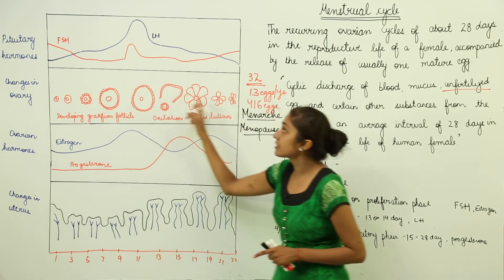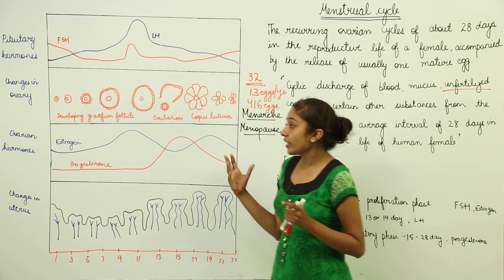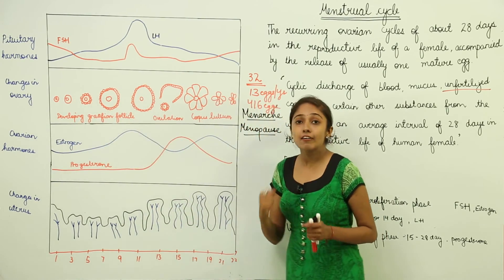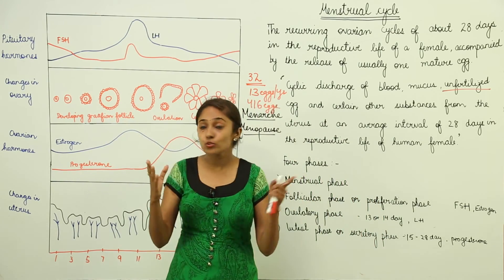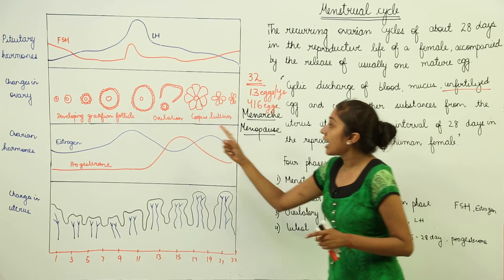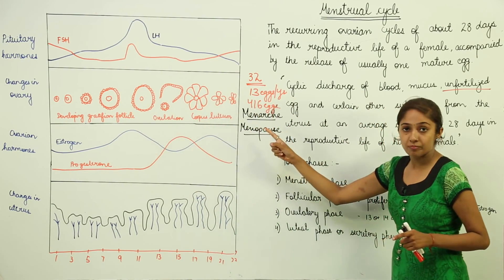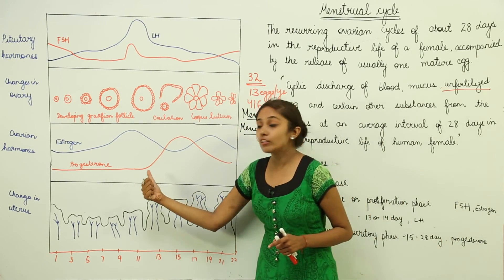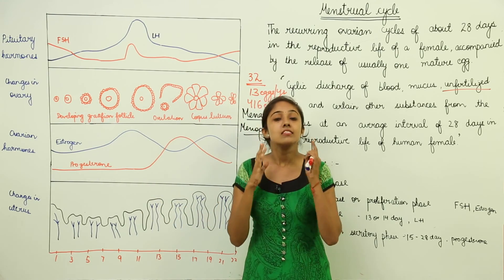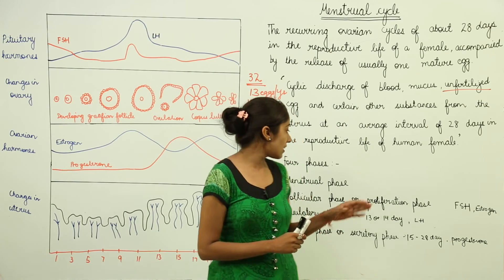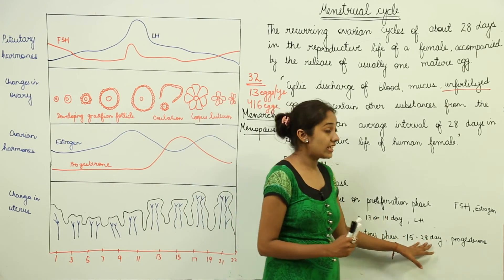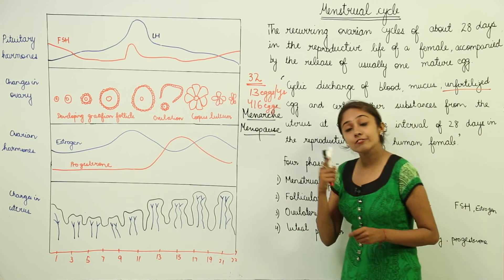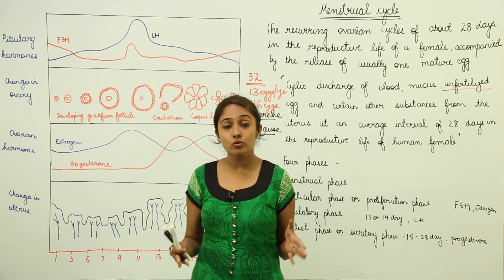Changes take place in the ovary: the Graafian follicle develops and releases the egg during the ovulatory phase. After this, the Graafian follicle changes into the corpus luteum, at which stage the level of progesterone increases. If the egg remains unfertilized, the menstrual phase occurs. If the egg is fertilized, implantation in the uterine wall occurs.